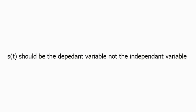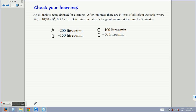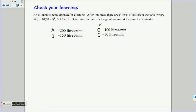So that concludes our lesson for today. Let's check our learning. An oil tank is being drained for cleaning. After t seconds, there are v liters of oil left in the tank, where v of t equals 10 times (10 minus t) squared. t is in between 0 and 10. Determine the rate of change of the volume at the time t equals 5 minutes. Make your selection. And the answer is C.